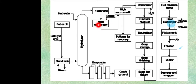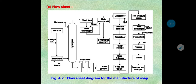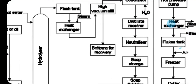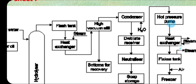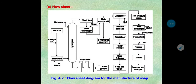After the heat exchanger and condensation process, the material goes to a high vacuum still. Here, higher fatty acids move to the top of the vacuum still, and higher fatty acids are recovered at the bottom for bottom recovery. The fatty acids are again condensed and recovered as distillate using water.